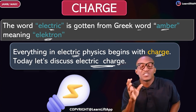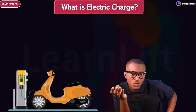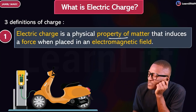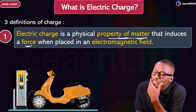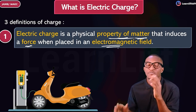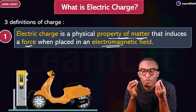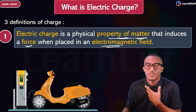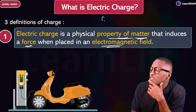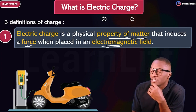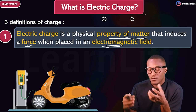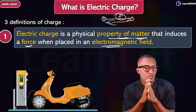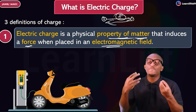To discuss electricity we have to start from the basis: what is charge? The first definition is that electric charge is a physical property of matter that induces a force when placed in an electromagnetic field. For example, if this is a positive charge and this is a negative charge, within an electric field, unlike charges attract — they pull toward each other. What brings them together is a force.